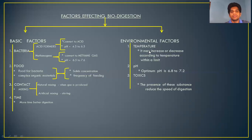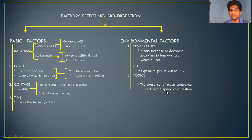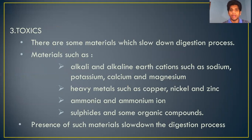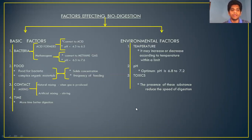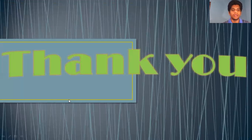Now the environmental factors. The first is temperature: digestion time may increase or decrease according to temperature within a limit. The next is pH: the optimum pH range is 6.8 to 7.2. And toxics: the presence of these substances reduces the rate of digestion. The substances referred to here are alkali and alkaline earth cations such as sodium, potassium, calcium, and magnesium; heavy metals such as copper, nickel, and zinc; ammonia and ammonium ions; and sulphides and some organic compounds. This is the summary of the topic we discussed. Hope you all understood the topic. Thank you.